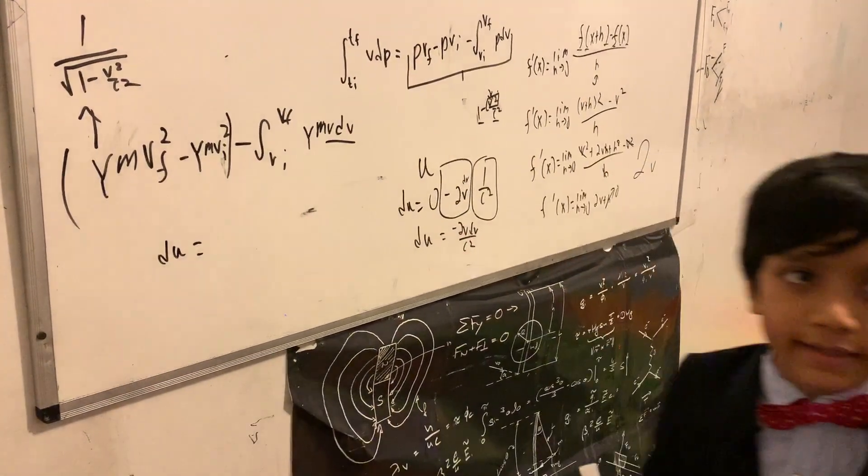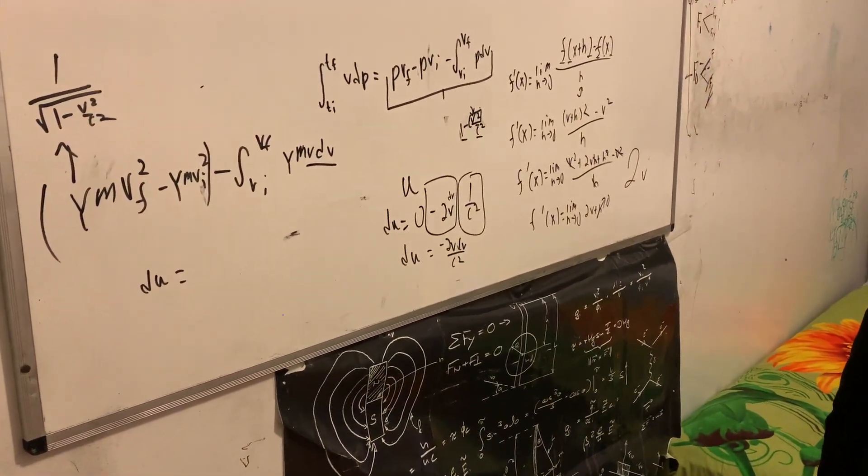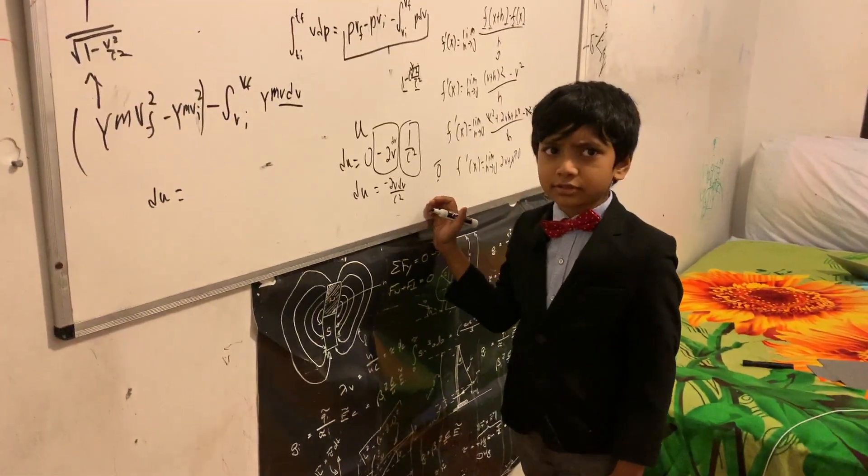And by the way, the reason I shouldn't take the derivative of C squared as a constant is because, yeah. Dividing by zero will not have some good outputs.